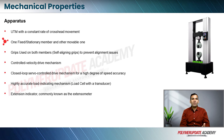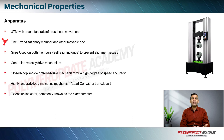There is going to be one fixed member and another movable member. When we talk about constant rate of crosshead movement, we are talking about the movable member. There are going to be grips on both members and the grips are going to be self-aligning in nature.